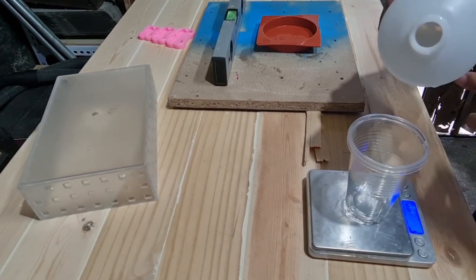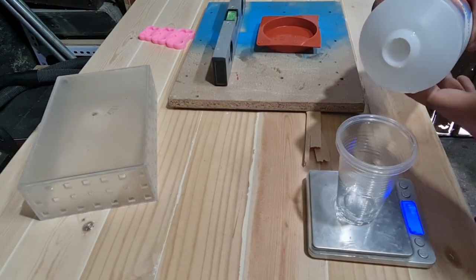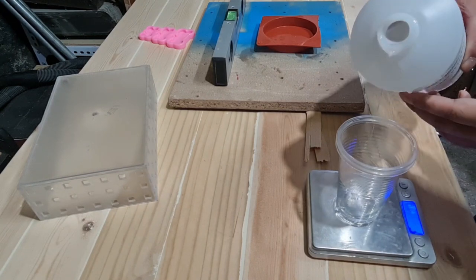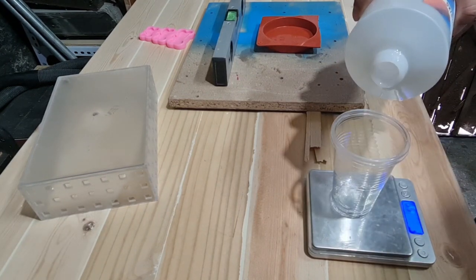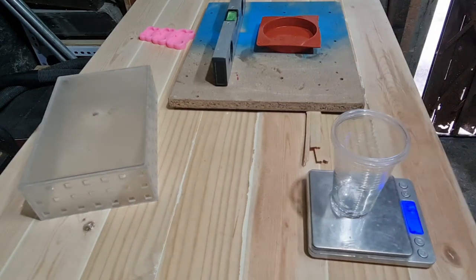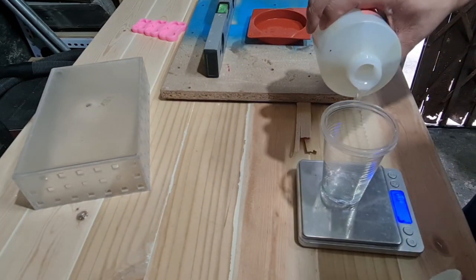I started by mixing enough resin for the base layer. The resin I used requires a 2 to 1 ratio: 2 parts resin, 1 part hardener.